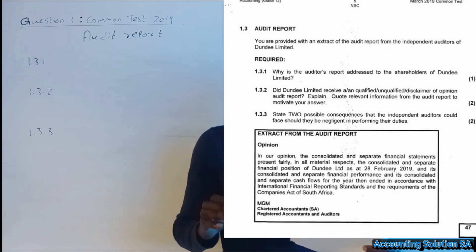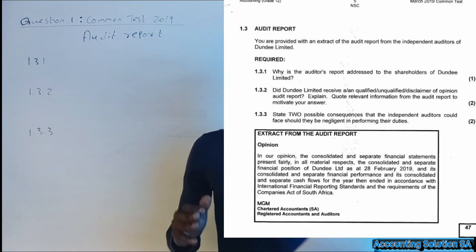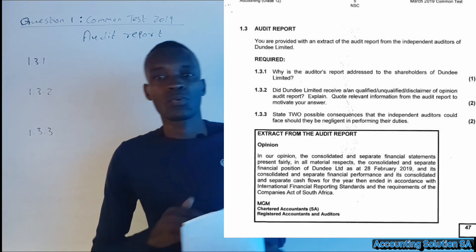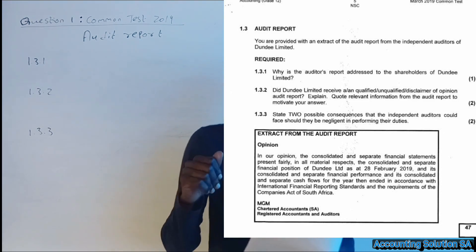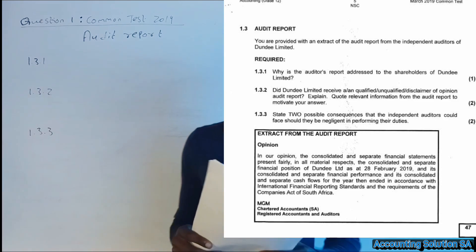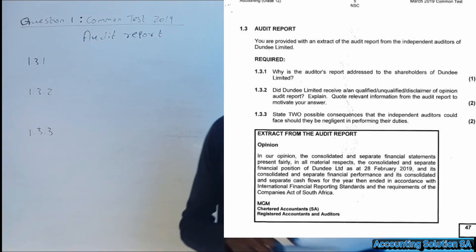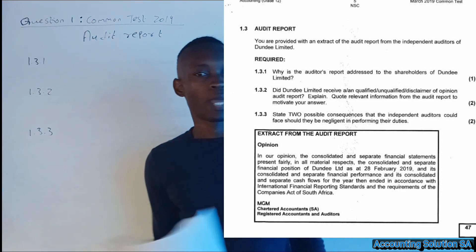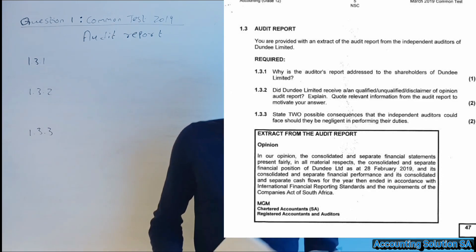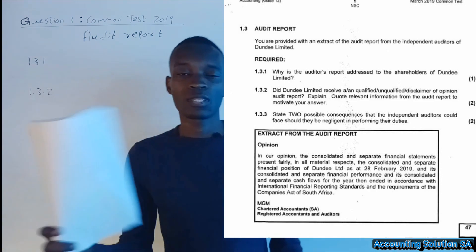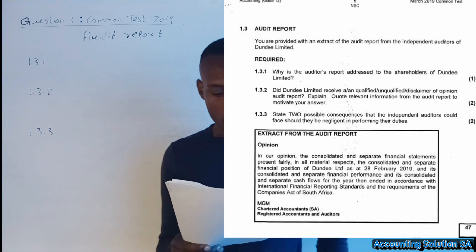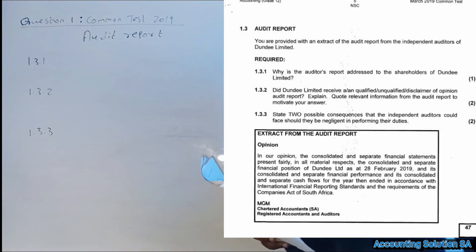Hi Grade 12 students. In this video I decided I should not leave any topic behind, so we are going to do a question related to audit reports. This is a continuation from the question paper we started, which was a common test written around March 2019. Please make sure you go and watch the other questions on income statement, ordinary capital notes, retaining income notes, and cash flow statement.